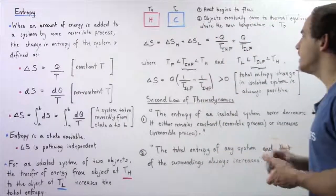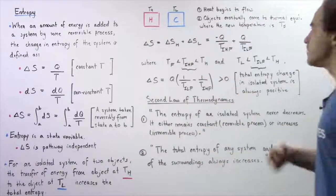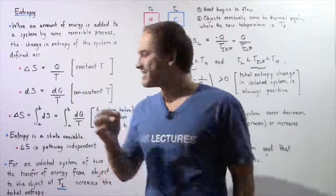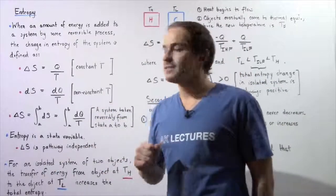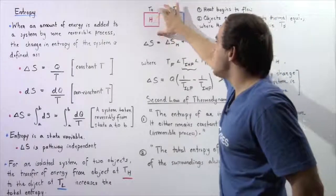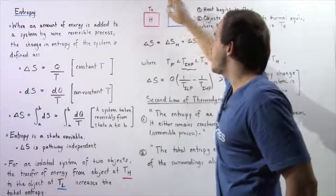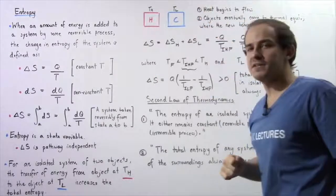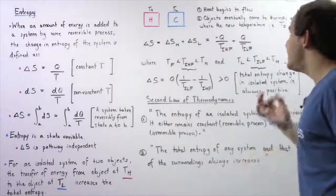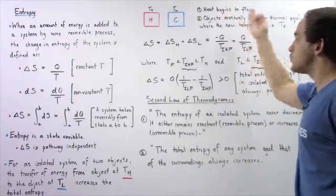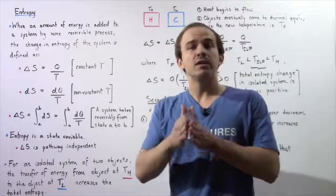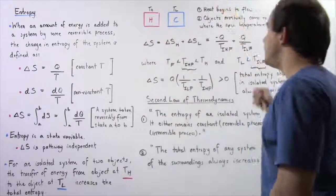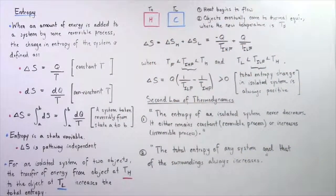Let's see exactly why by looking at the following scenario. Suppose we have two objects that form our isolated system. We have an object H at a higher temperature TH and an object that is cooler at a lower temperature TL. Initially, energy begins to flow as a result of heat — due to the difference in temperature — so we connect the two objects and heat transfer takes place.